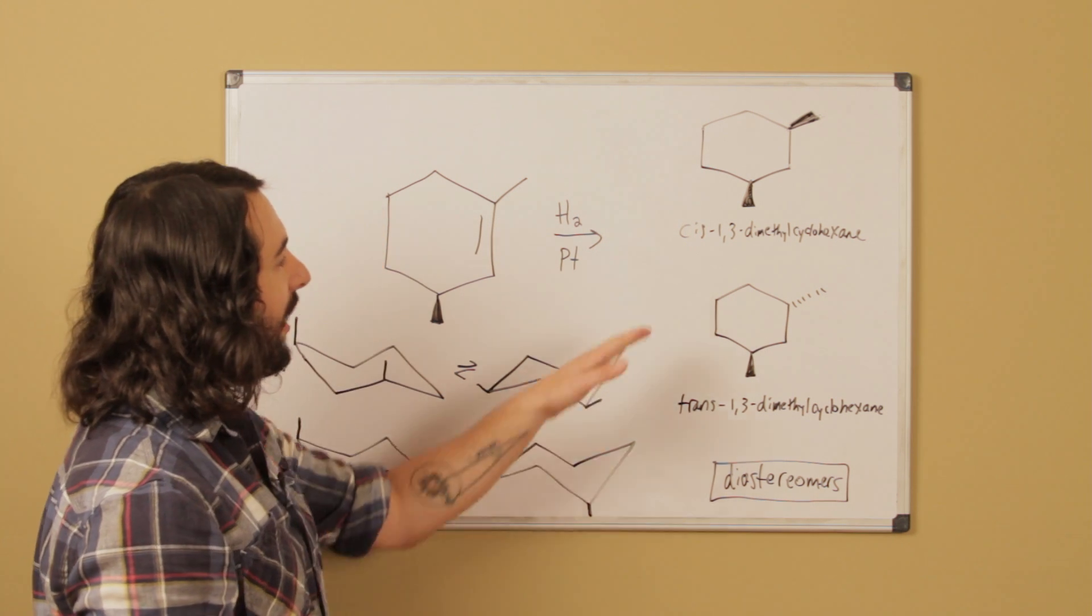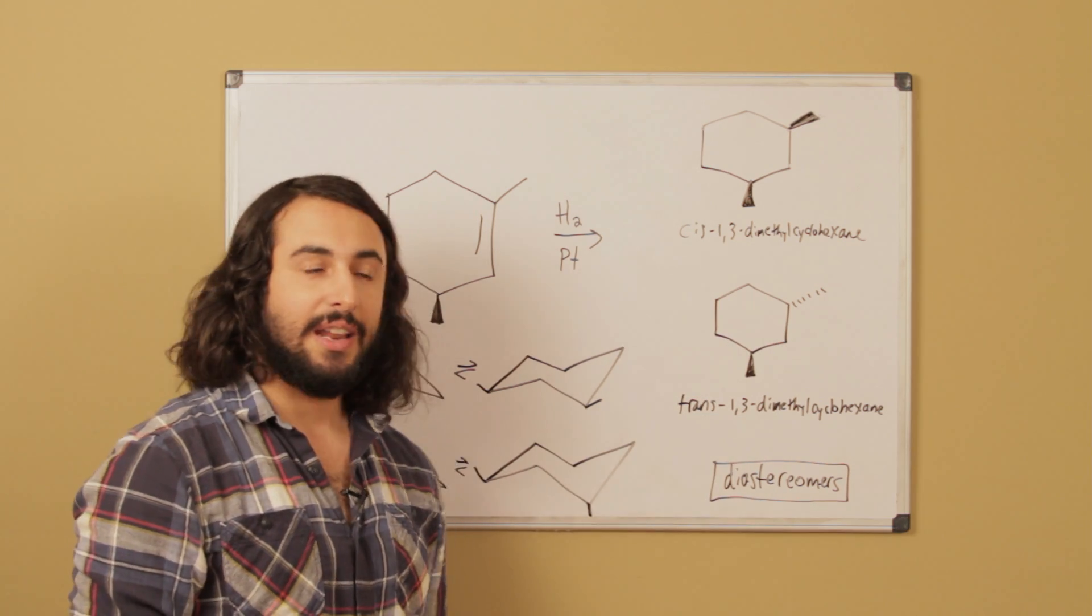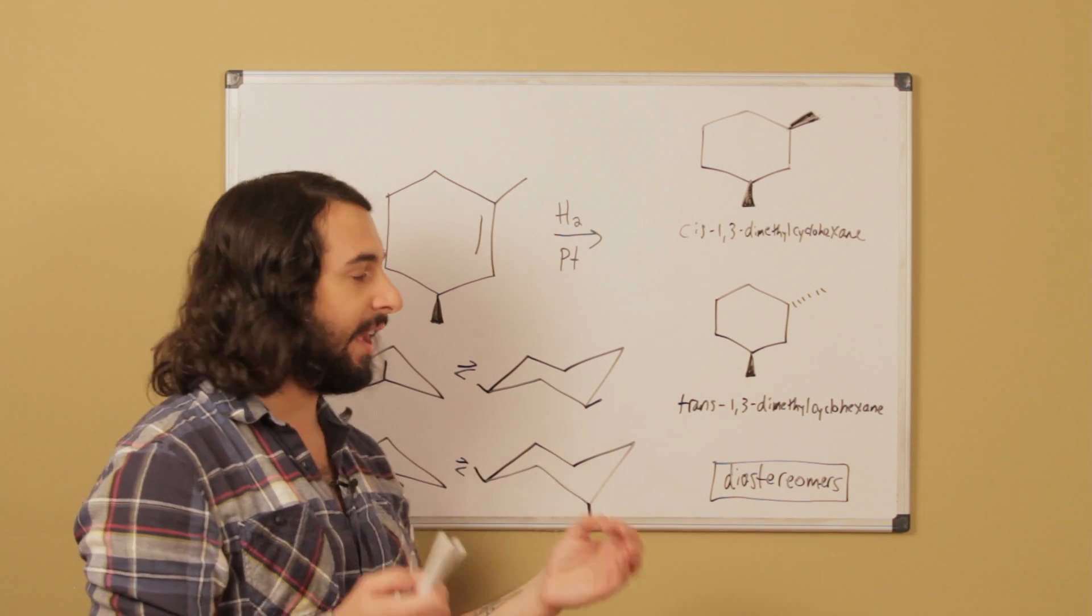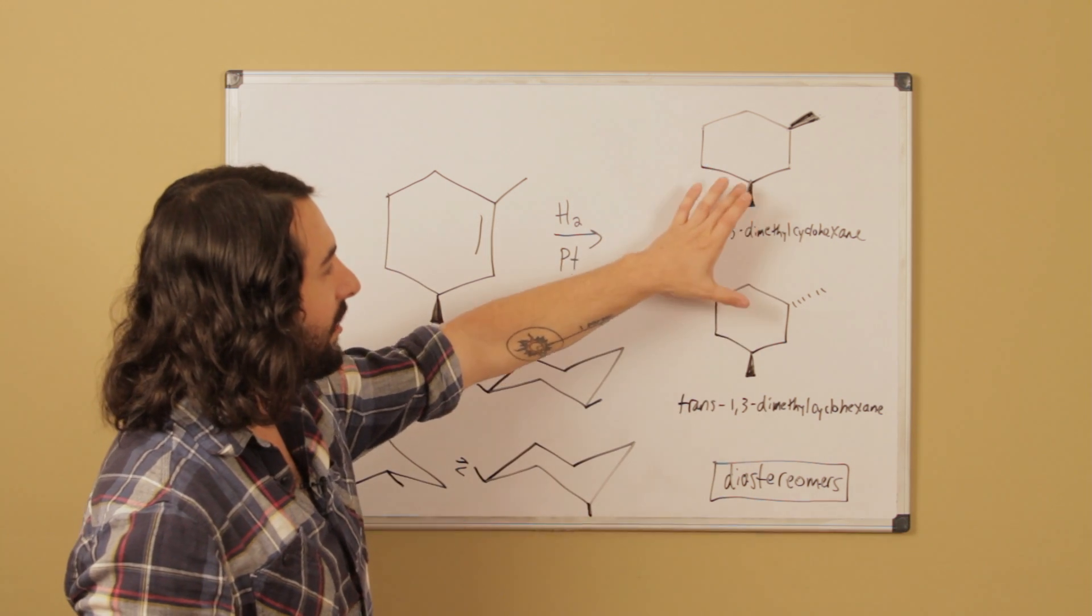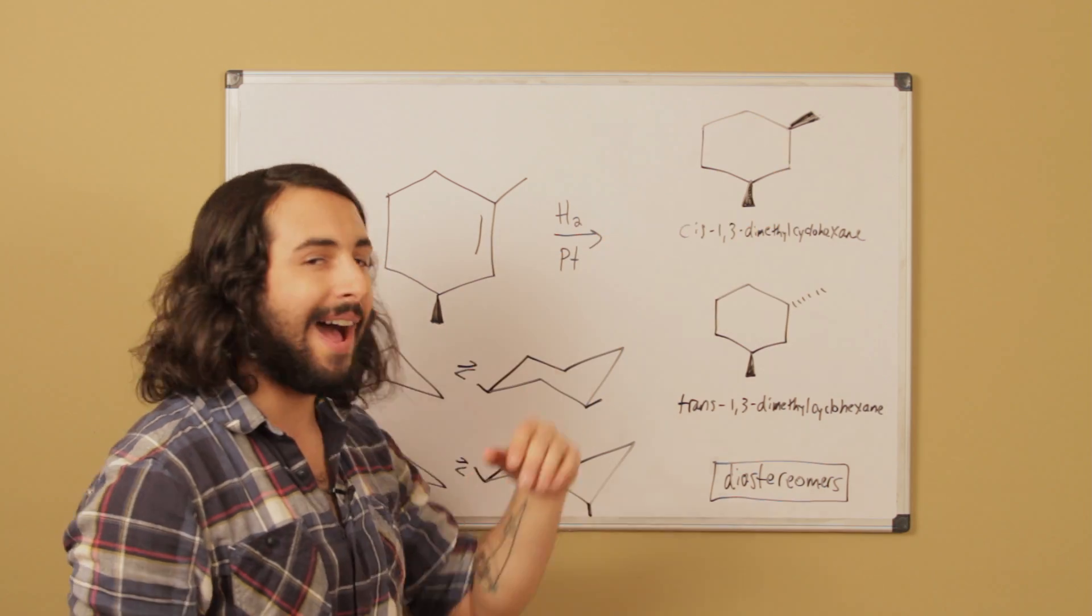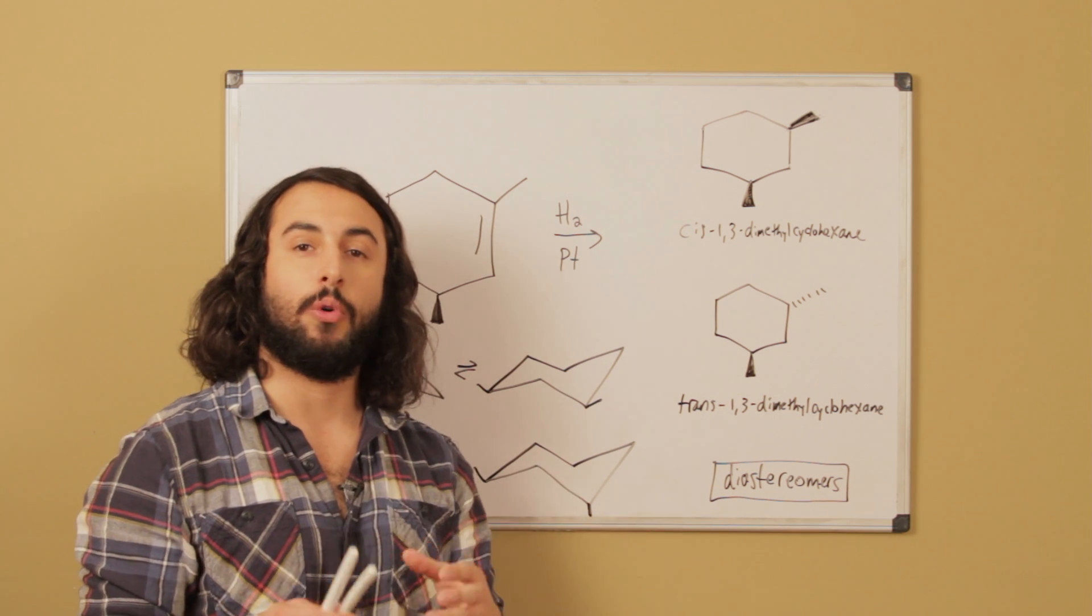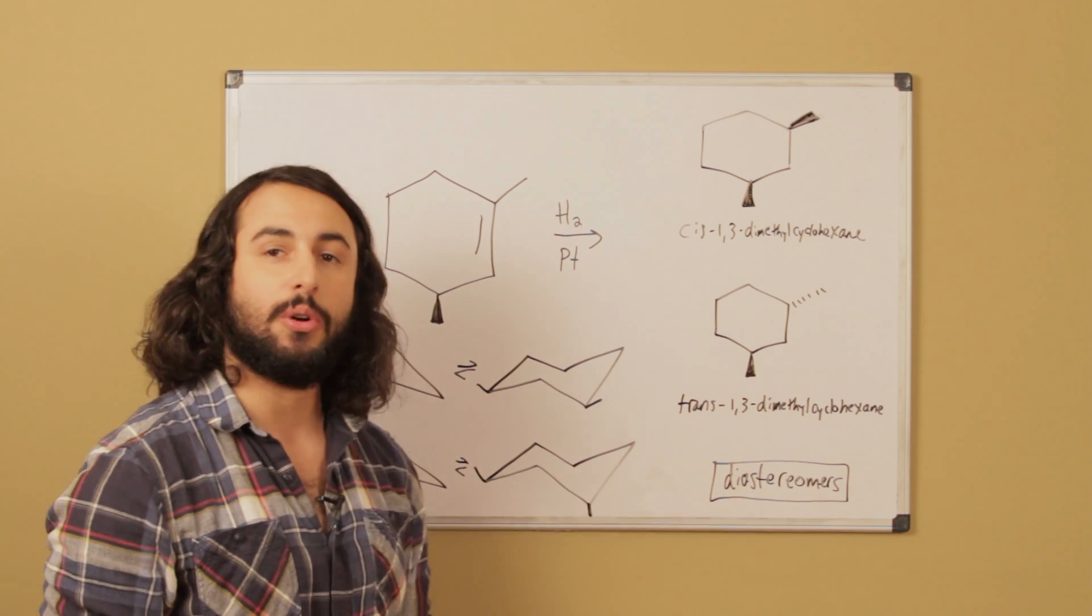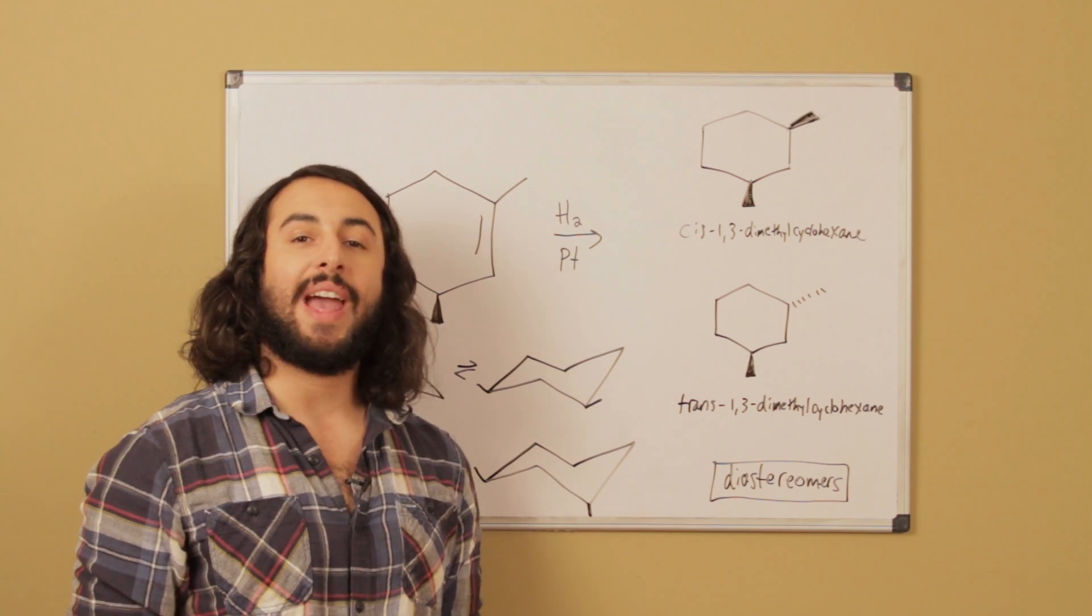We have cis-1,3-dimethylcyclohexane and trans-1,3-dimethylcyclohexane. These are diastereomers because this stereocenter has the same configuration, but this stereocenter has opposite configuration. Anytime molecules differ in one or more but not all of the stereocenters, those are going to be diastereomers. That is the stereochemical relationship between them.